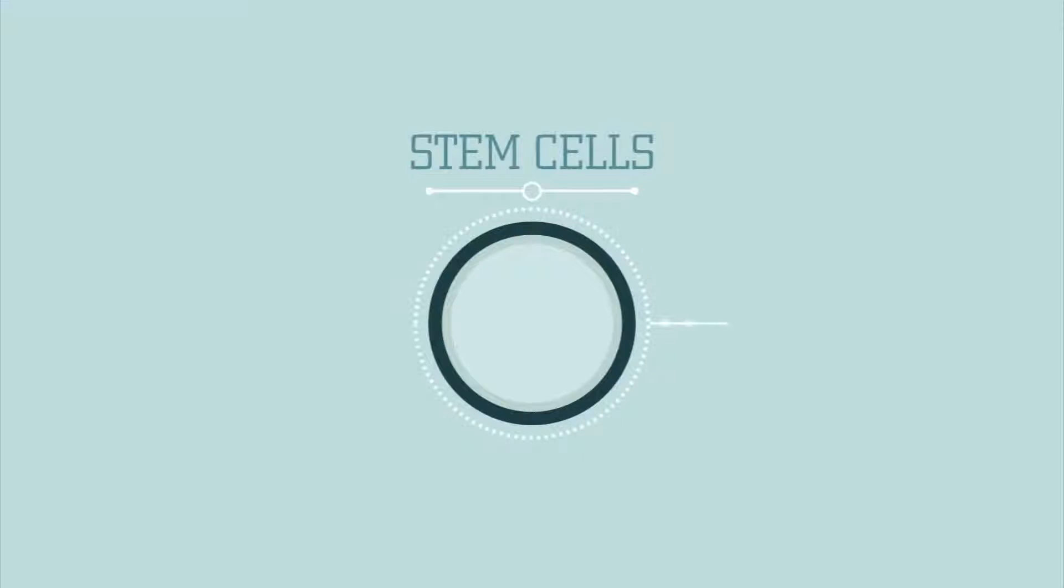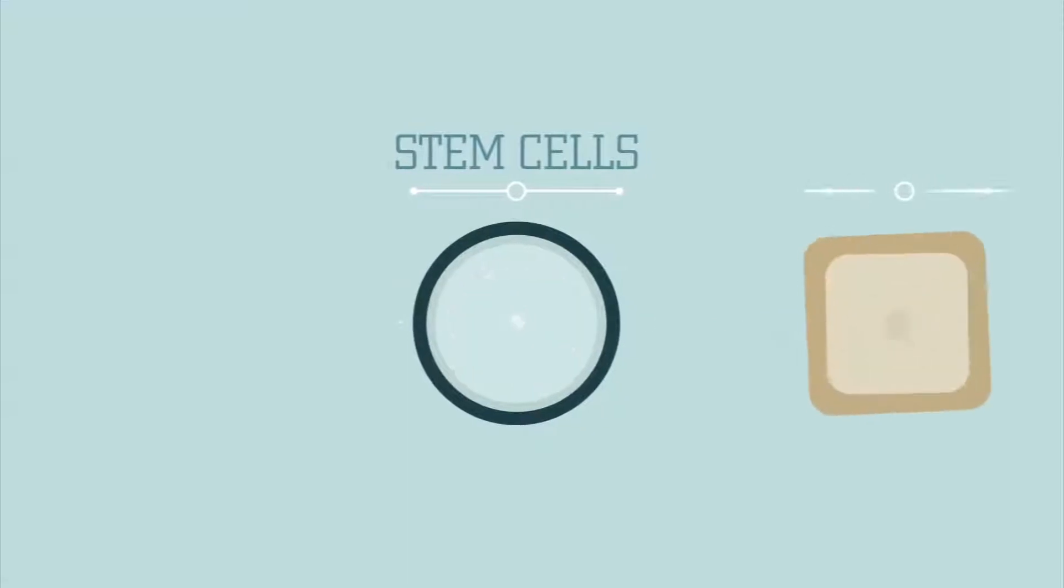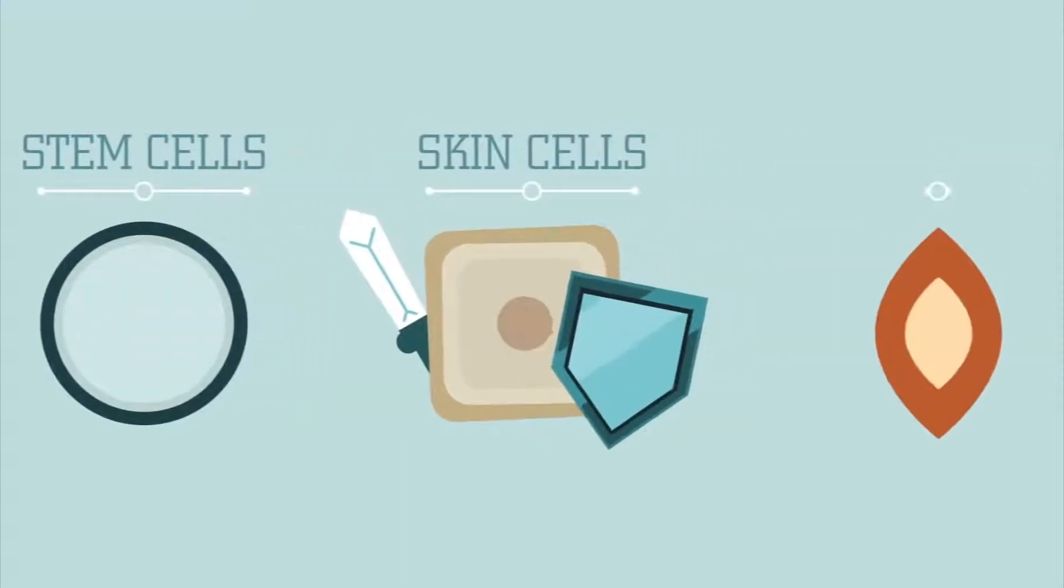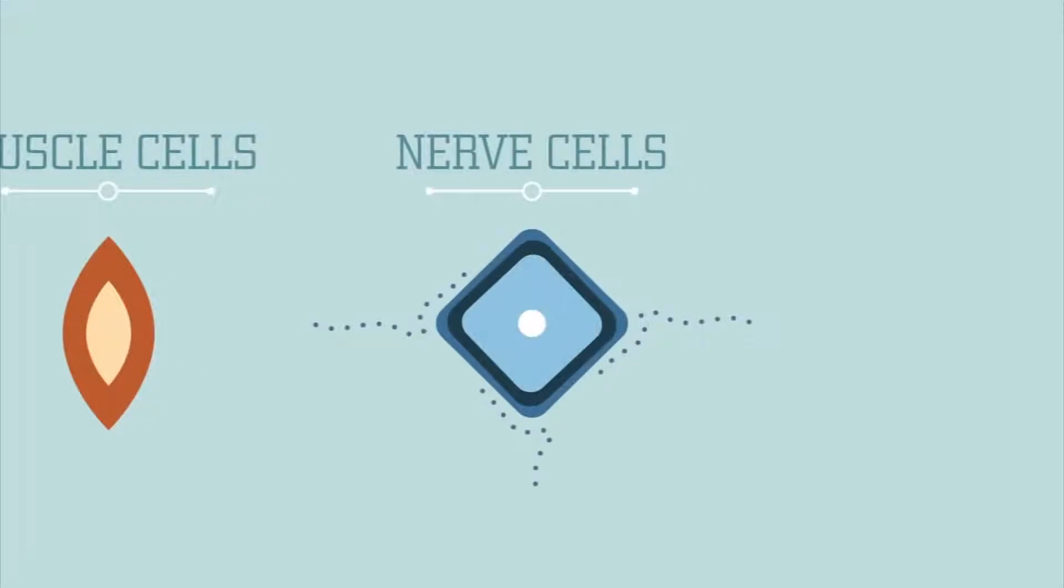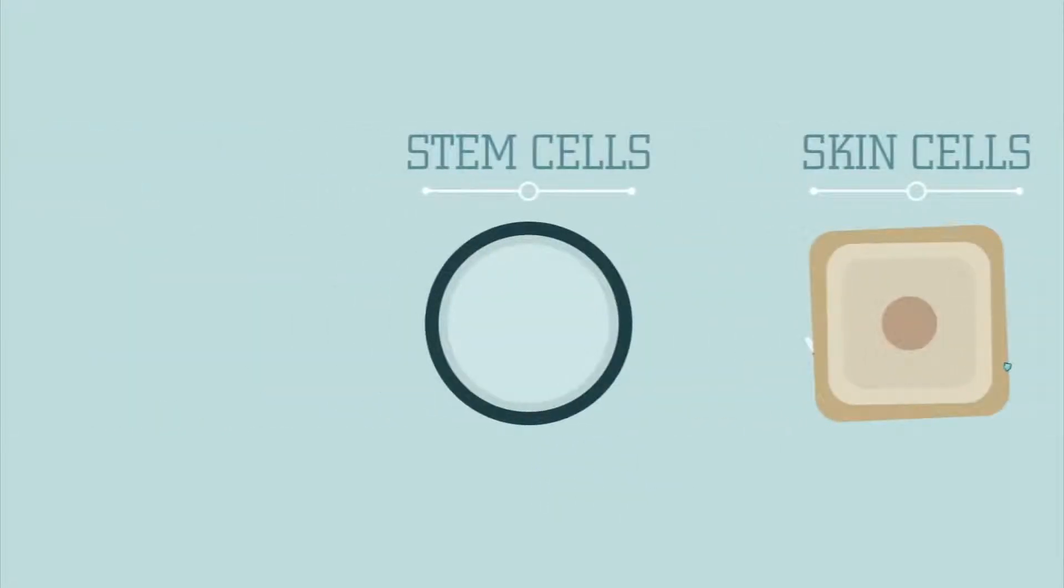Stem cells are cells that are undifferentiated, meaning they do not have a specific job or function. While skin cells protect your body, muscle cells contract, and nerve cells send signals, stem cells do not have any specific structures or functions.